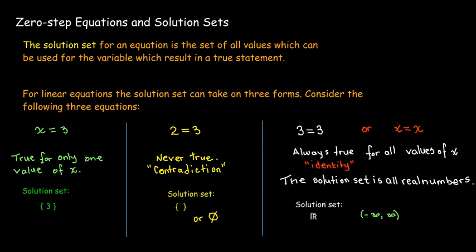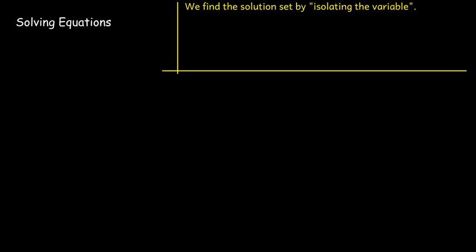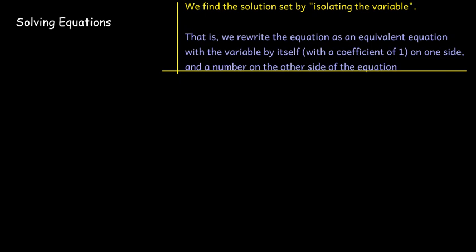To solve equations, our basic idea is to isolate the variable — that is, get the variable by itself in an equivalent equation. We want the variable to have a coefficient of 1 on one side of the equation, with a number on the other side. Starting from the given equation, we want to get to a simpler, equivalent equation. What does equivalent mean?